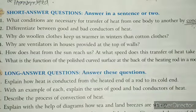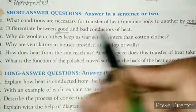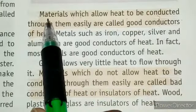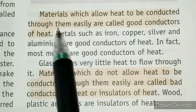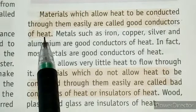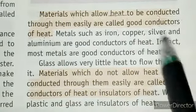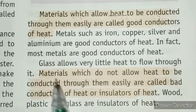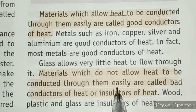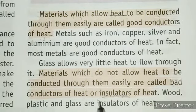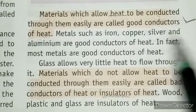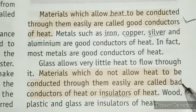The next question: differentiate between good and bad conductors of heat. Materials which allow heat to be conducted through them easily are called good conductors of heat. Materials which do not allow heat to be conducted through them easily are called bad conductors of heat, or insulators. Examples of good conductors include iron, copper, and silver. Insulators include wood, plastic, and glass.